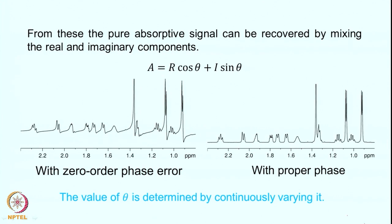We have the initial spectrum which is not phase corrected — because of the error in how the pulse was applied it looks distorted. After phase correction, we have a clean signal. The value of theta is determined by continuously varying it; you do not know the correct value in advance, but you keep changing it while monitoring the spectrum in real time. At some value you will find the spectrum is correctly phased.